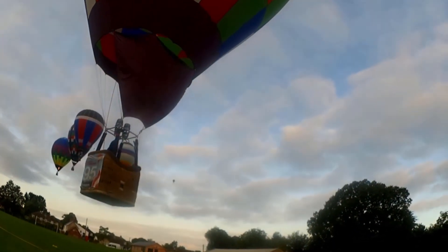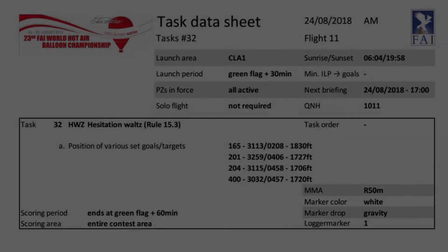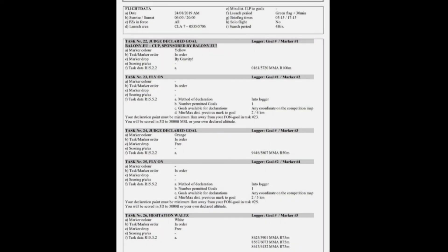The last piece of information that all tasks will have defined is the task order. In our example we only have one task for the flight, so this doesn't need to be defined. However, in this task sheet we have multiple tasks, and we can see that they are all specified to be flown in order, which means they must be completed in the order that they are on the task sheet.